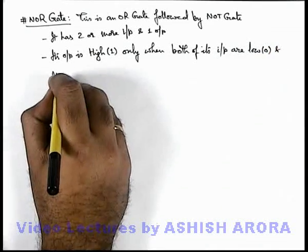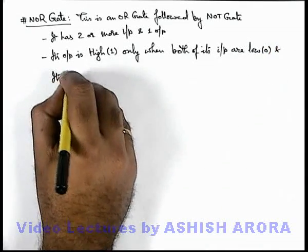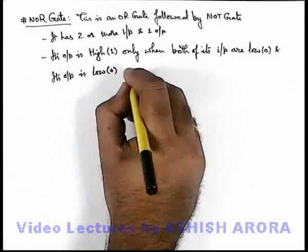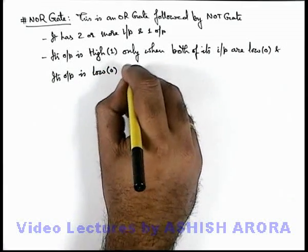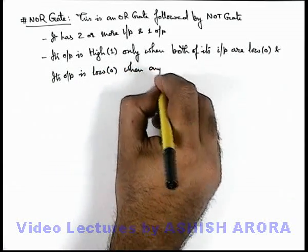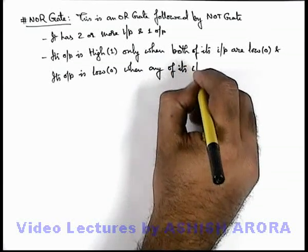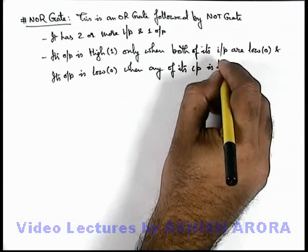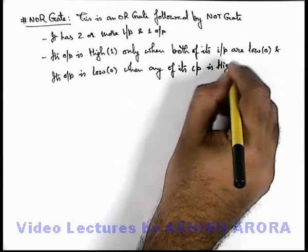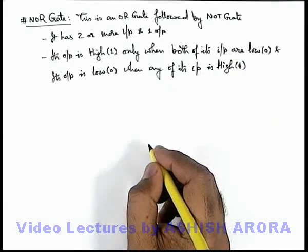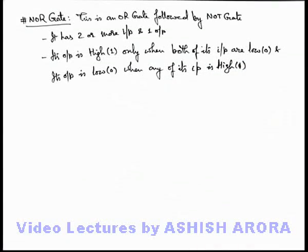And we can write that its output is LOW, that is in zero state, when any of its inputs is HIGH, in state 1. Here we can see the symbol of an OR gate and its truth table.